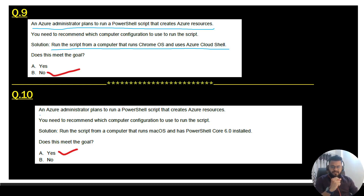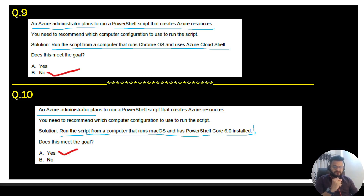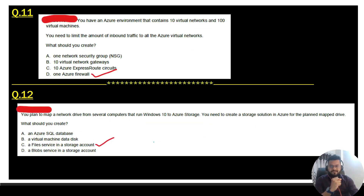Question 10: same problem statement — an Azure administrator plans to run a PowerShell script that creates Azure resources. Solution: run the script from a computer running macOS with PowerShell Core 6.0 installed. By achieving this we can solve the problem, so go with option A — Yes, this meets the goal.